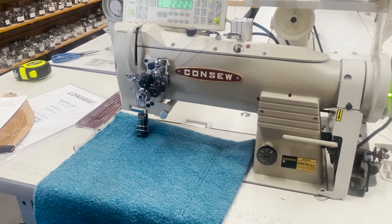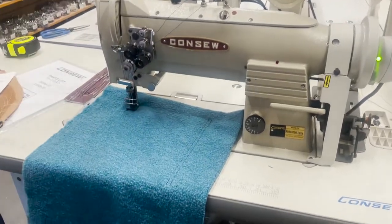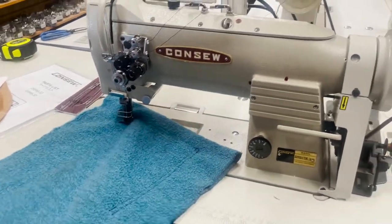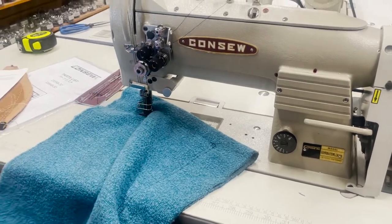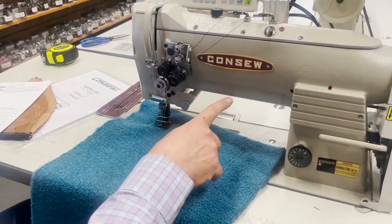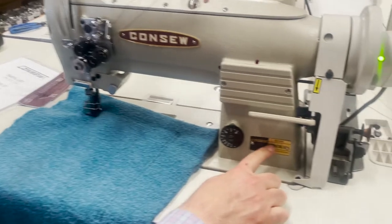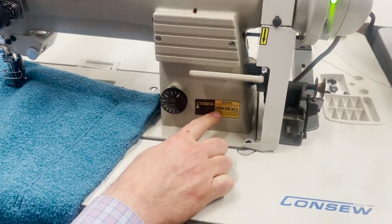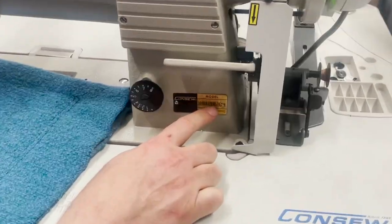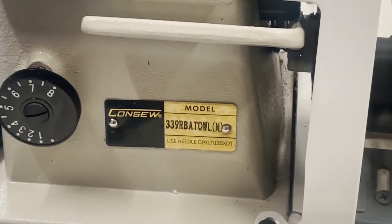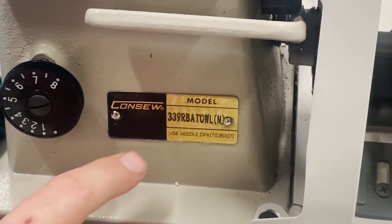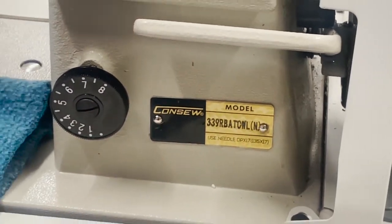Hello everyone, this is David from GoldstarTools.com. I hope everybody is doing great and well. Today we're going to work on a Consew 339RBATCWN. Anyone who knows Consew 339 knows it's the double needle walking foot machine.